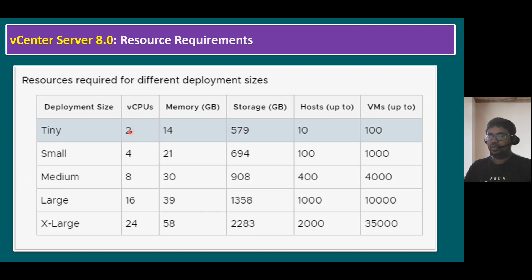For tiny, the minimum CPU is 2, whereas X-large has 24 CPUs. Tiny requires a minimum of 14 GB memory and X-large requires 58 GB. Storage also increases accordingly. Tiny supports a minimum of 10 ESXi hosts and up to 100 virtual machines. X-large supports up to 2,000 ESXi hosts and 35,000 virtual machines.